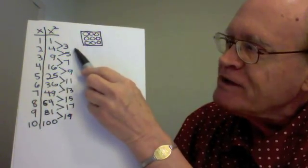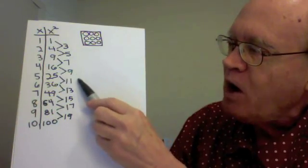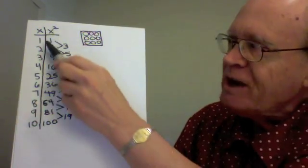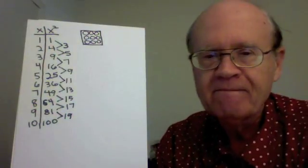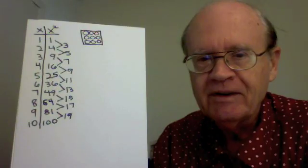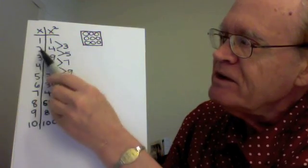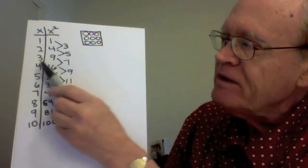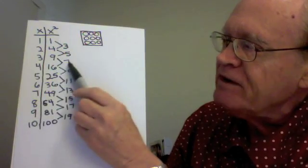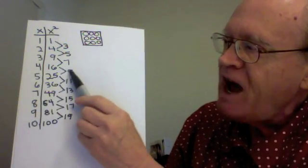How do the differences, three, five, seven, nine, and so on, relate to the numbers in the X column? Do you notice one plus two is three, two plus three is five, three plus four is seven, four plus five is nine, and so on.